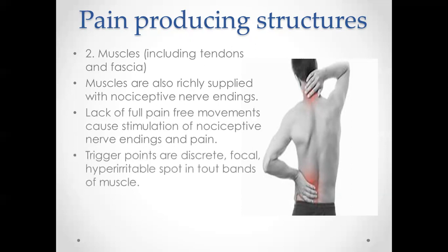Next are trigger points. Trigger points represent a key factor in patients with chronic musculoskeletal pain. Travell and Simons defined a trigger point as a discrete, focal, hyper-irritable spot in a taut band of muscle. An active trigger point causes pain at rest and is tender to palpation with a referred pain pattern similar to the patient's pain complaint. A latent trigger point, or tender point, is locally tender, does not refer pain, and does not elicit a twitch response.